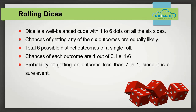A dice is a cube which has six faces numbered from one to six using dots. Chances of getting any of those six faces as the top face are equally likely as the dice is well-balanced and unbiased. So there are a total of six possible outcomes which are distinct from each other. Hence, there is one chance out of six to get a desired number, and the probability of each of them is one by six. All the numbers are less than seven, so the probability of getting a number less than seven is six by six, that is one, because it is a sure event.